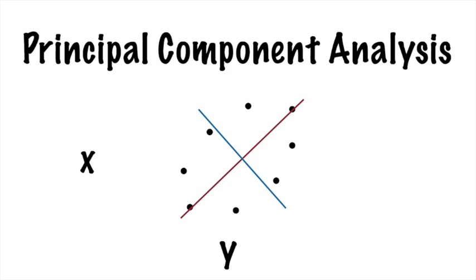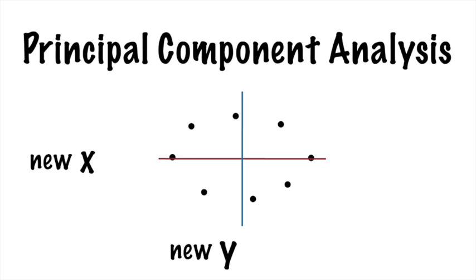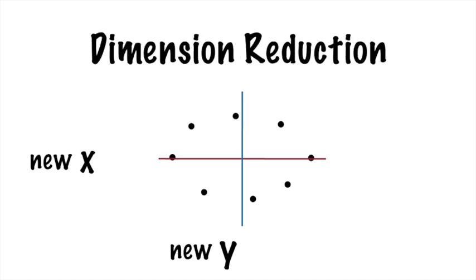Now these eigenvectors have given us a much more useful axis to frame the data in. We can now reframe the data in these new dimensions. We're just looking at it from a different, more intuitive angle. PCA highlights the most important aspects of variation and de-emphasizes others.